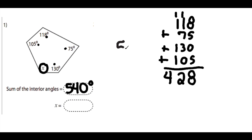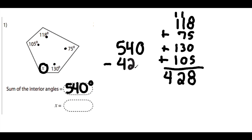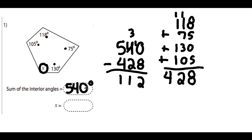To find the missing angle, we take our angle sum of 540 and subtract the total of all the angles we have so far. So 540 minus 428 is equal to 112 degrees.